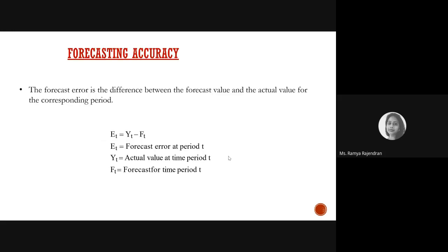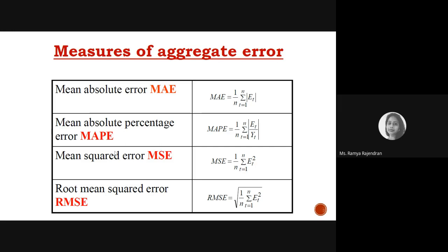Forecasting accuracy is very important to identify whether the model we are using to predict future values is good or not. Forecasting error is the difference between your forecasted value and your actual value over a period. So error equals y minus f — the error for period t equals actual value minus predicted value, where e is the forecast error, y is the actual value, and f is the forecasted value.